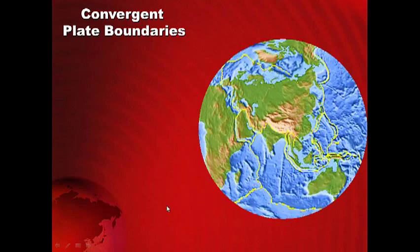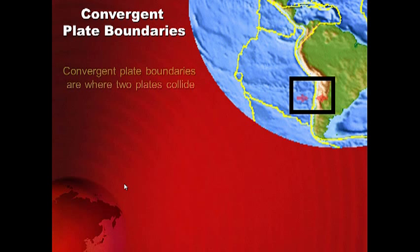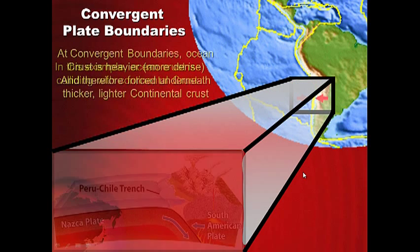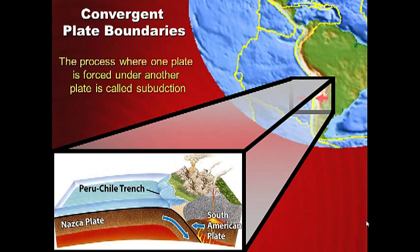Convergent plate boundaries are where the biggest earthquakes occur and the biggest mountains form. Two plates collide — this plate is going down beneath the South American plate. The Nazca plate is being pushed underneath the South American plate. At convergent plate boundaries, ocean crust is heavier, more dense, and is forced underneath thicker, lighter continental crust. Continental crust floats higher since it's less dense. This process where one plate is forced underneath another plate is called subduction, and a subduction zone is formed.